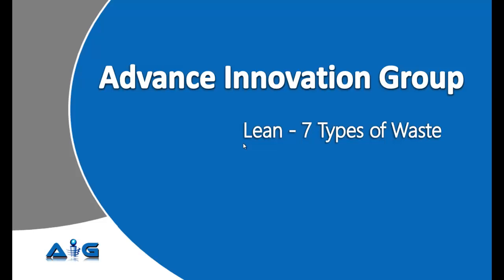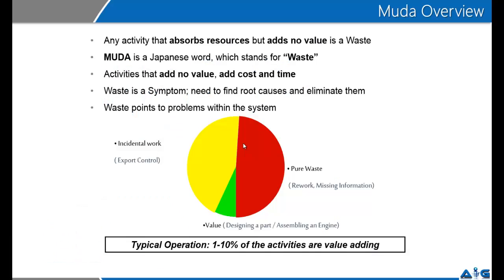Hi, my name is Pranay and I work with an organization called Advanced Innovation Group. Through this video I intend to introduce you to the basic concept around the 7 types of wastes, popularly referred to as muda in the lean terminology. You would already know that any activity that absorbs resources but adds no value is what is termed as a waste or muda. Muda is a Japanese word which stands for waste.